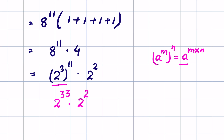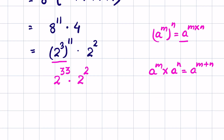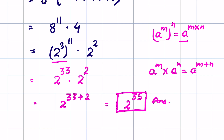There is also the identity where a raised to the power m times a raised to the power n equals a raised to the power m plus n. So here we can write 2 raised to the power 33 plus 2, giving a final answer of 2 raised to the power 35.